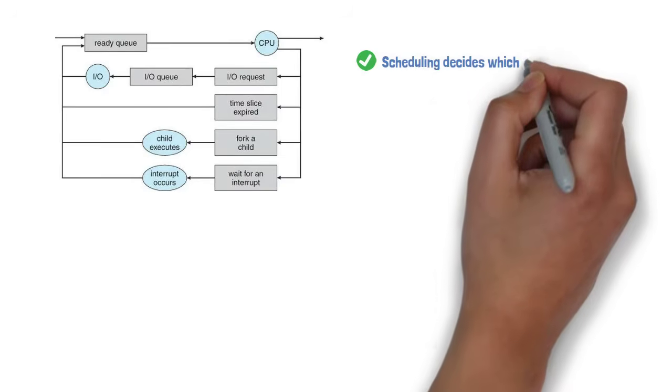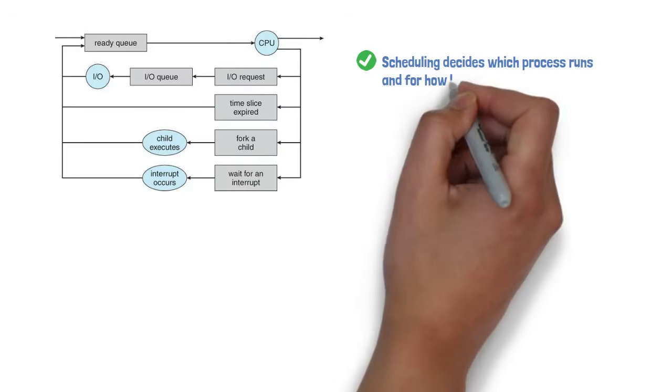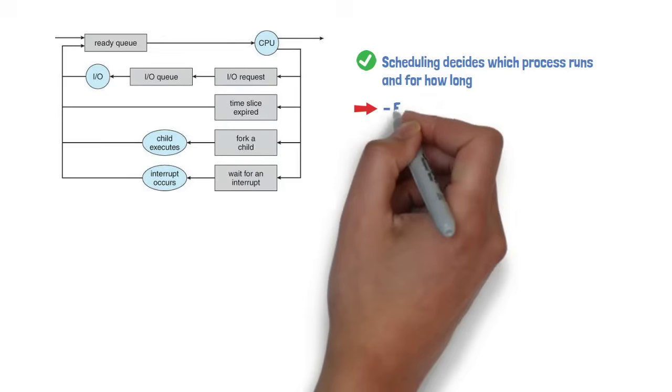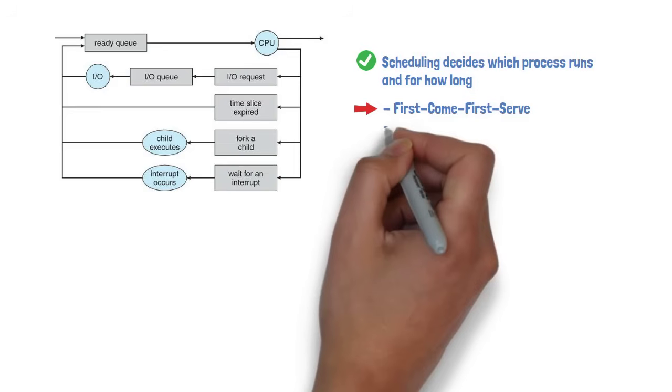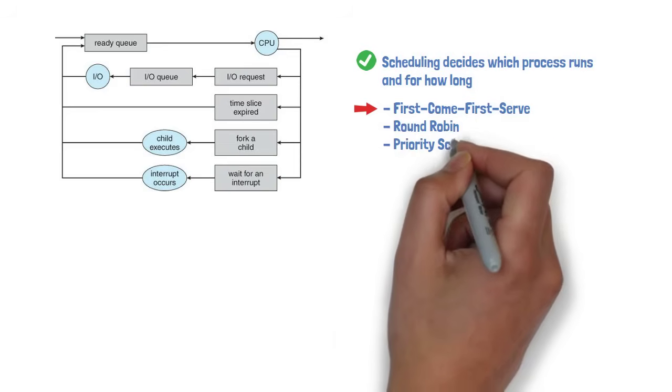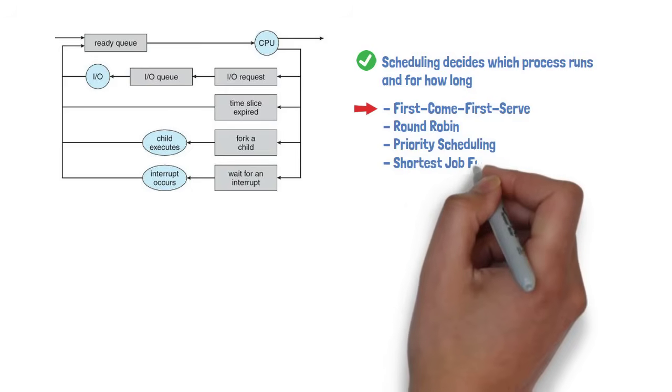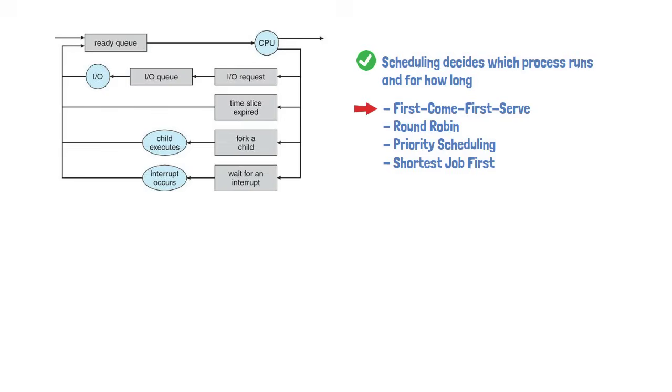Scheduling decides which process runs and for how long. Algorithms like first-come first-serve, round-robin, priority scheduling, and shortest-job-first are used to optimize efficiency and fairness.